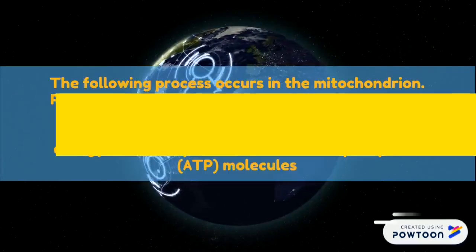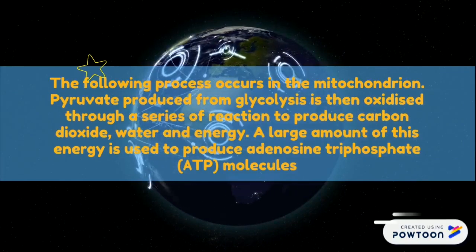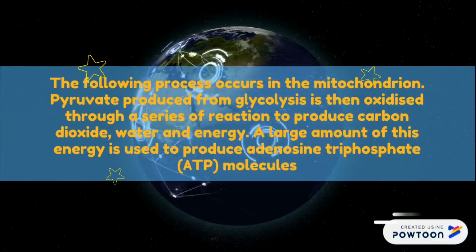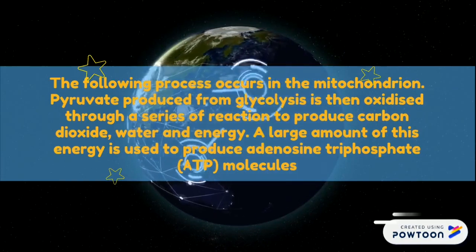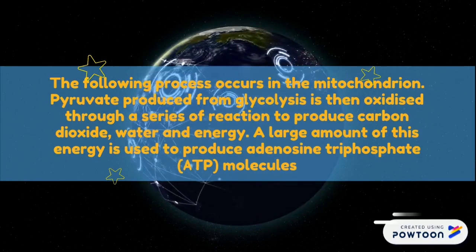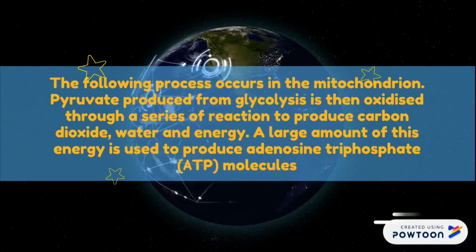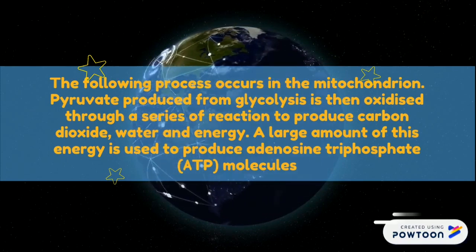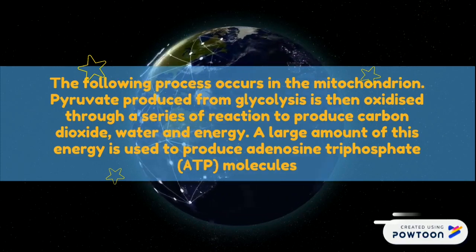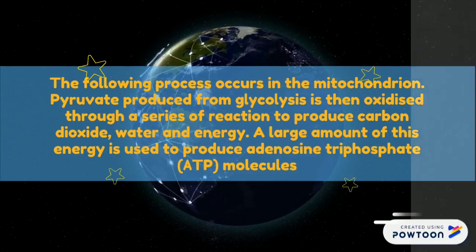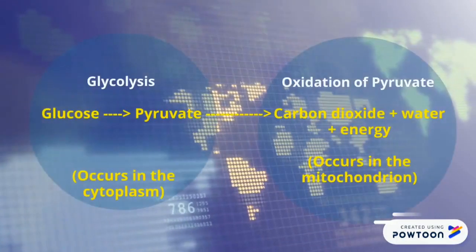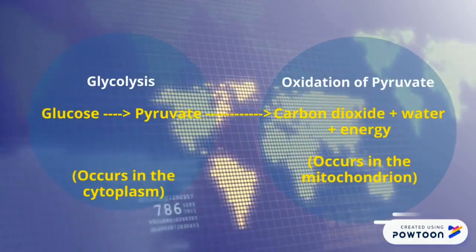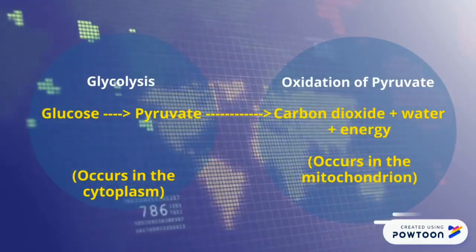The following process occurs in the mitochondria. Pyruvate produced from glycolysis is then oxidized through a series of reactions to produce carbon dioxide, water, and energy. A large amount of this energy is used to produce adenosine triphosphate (ATP) molecules. During the glycolysis process, the breakdown of glucose into pyruvate occurs in the cytoplasm.